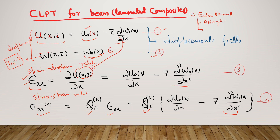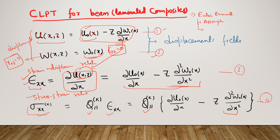Epsilon_zz is also zero since no transverse stretching is allowed. So the only remaining strain is epsilon_xx = ∂u(x,z)/∂x = ∂u₀/∂x − z · ∂²w₀/∂x². The stress-strain relation gives sigma_xx = Q₁₁⁽ᵏ⁾ · epsilon_xx, where Q₁₁⁽ᵏ⁾ are the material properties in each lamina. Substituting epsilon_xx gives sigma_xx in terms of ∂u₀/∂x and ∂²w₀/∂x².